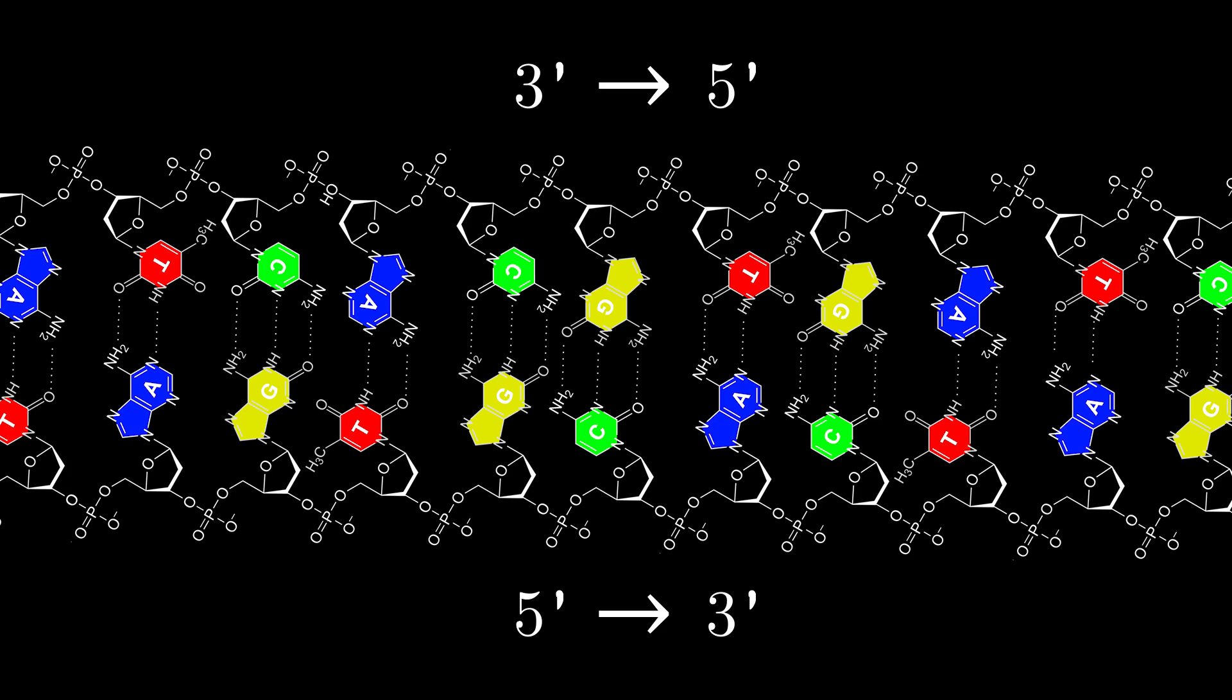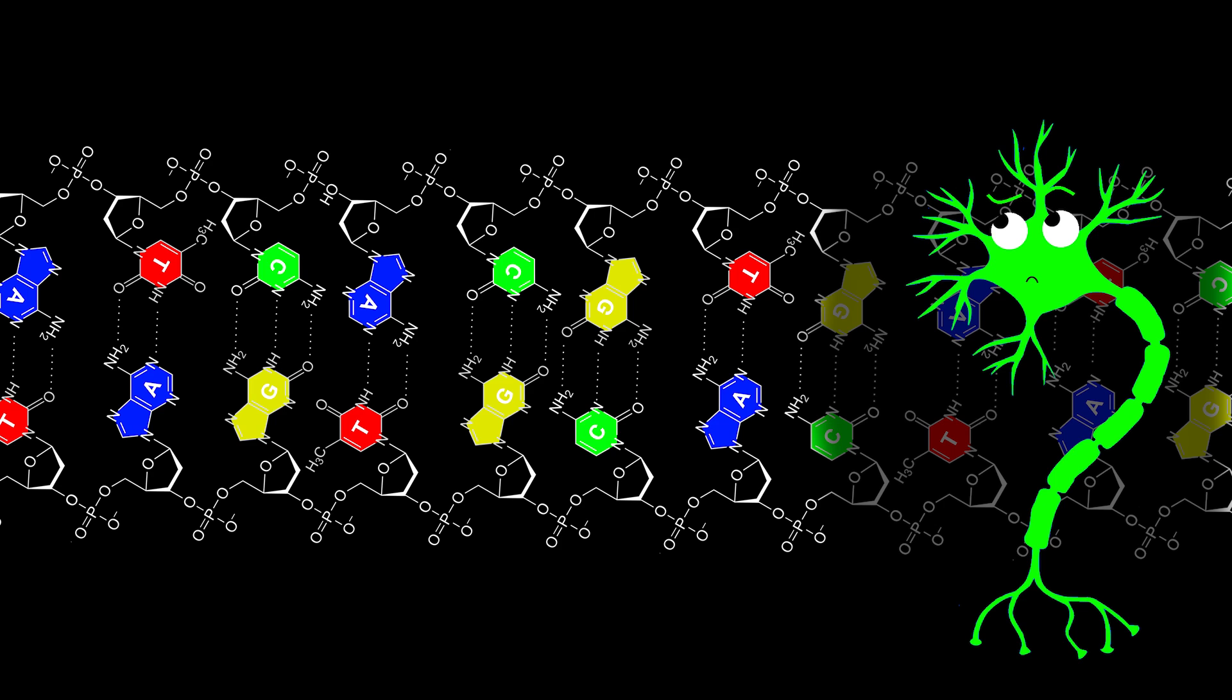Thus, each direction of DNA is labeled either 5' or 3'. But as beautiful as this structure is, there's still one question that needs to be answered.